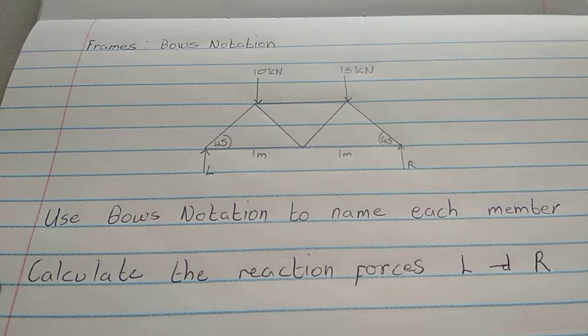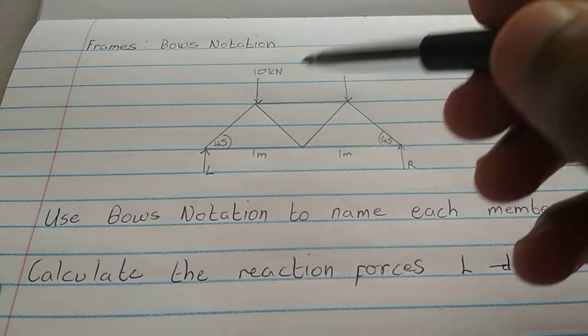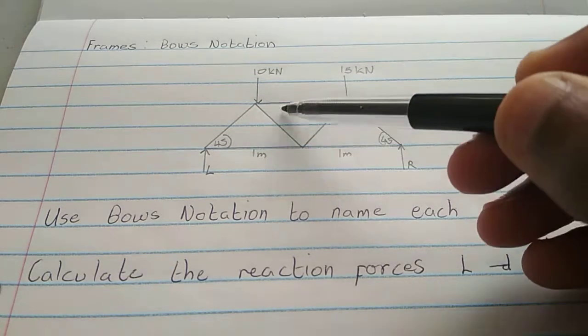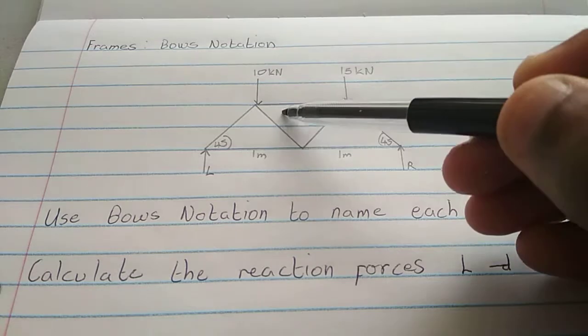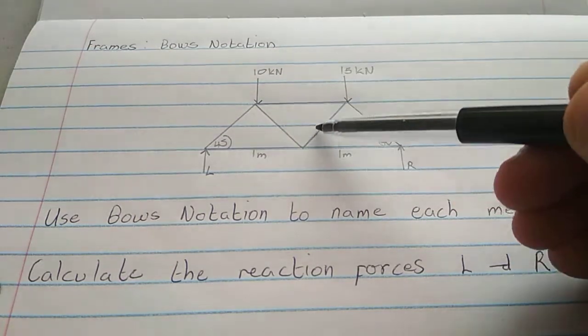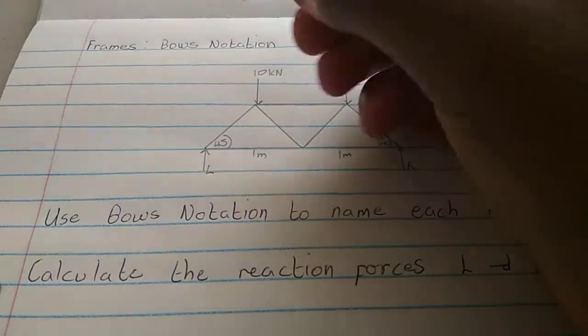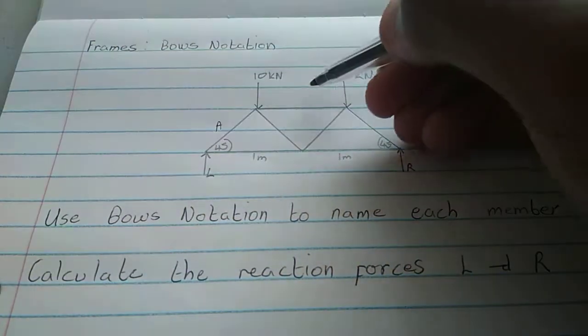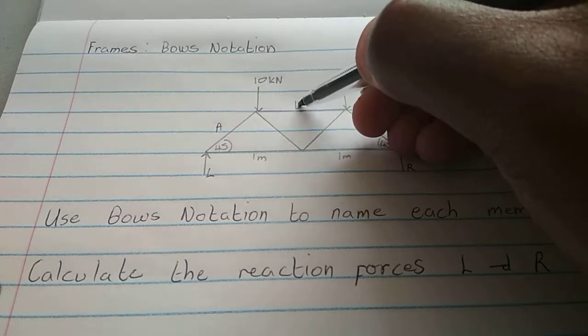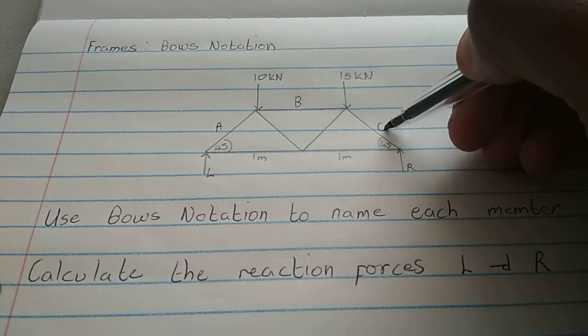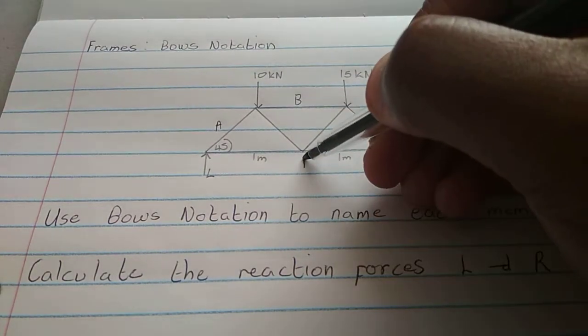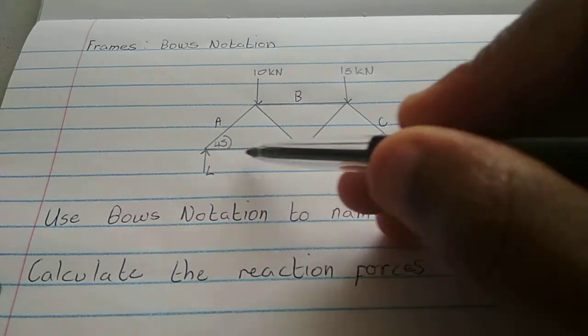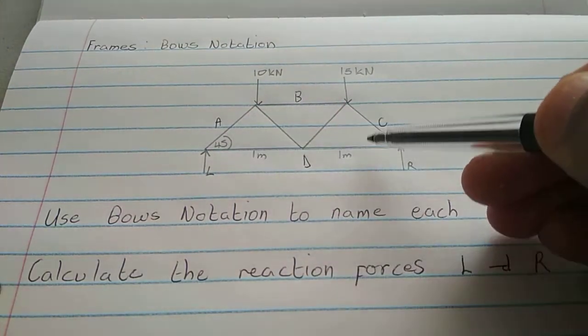In naming each member in this frame, you always name it in a clockwise manner, if you can just imagine a spiral going that way. So we're going to start there. We'll name this member A. We're going in a clockwise direction. So, that's going to be B. That's C. Now, D is this whole member there.